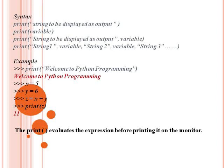Let's look at examples. First method example: print function with a string like 'welcome to Python programming'.